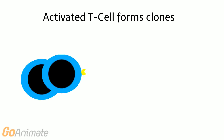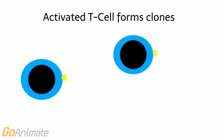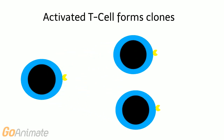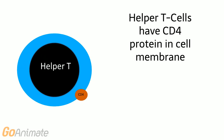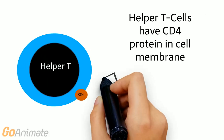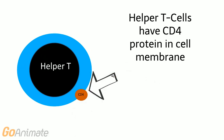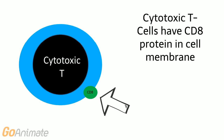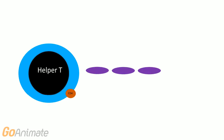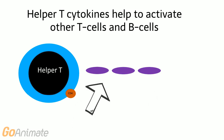Activated T cells form clones. Helper T cells contain the CD4, or cluster of differentiation number 4, protein in their cell membranes. Cytotoxic T cells contain the CD8 protein in their cell membranes. The cytokines secreted by helper T cells work to activate other immune system cells.